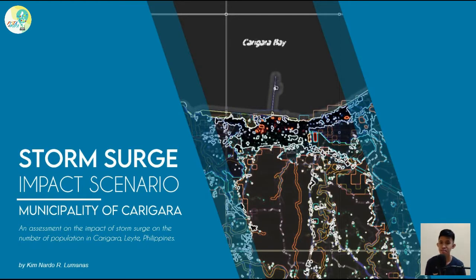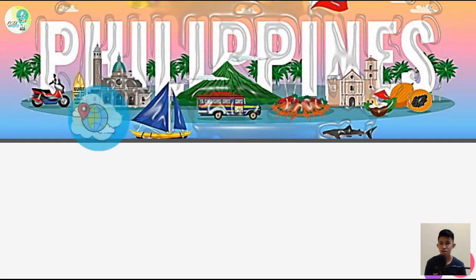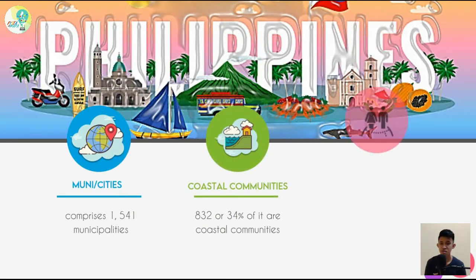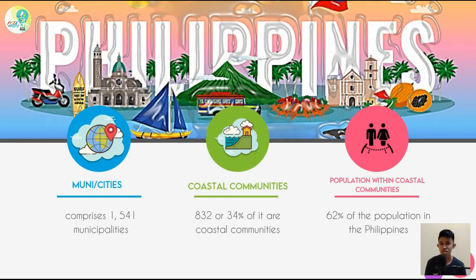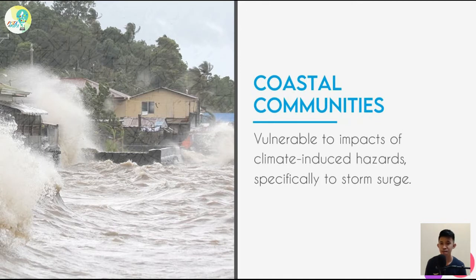The topic is all about the storm surge impact scenario in the municipality of Karigara, Leyte. This is an assessment on the impact of storm surge on the population of the town. The Philippines is an archipelagic state surrounded by hundreds of kilometers of shorelines where communities thrive, boosting coastal development. Out of 1,541 municipalities, 832 or 34% are coastal communities which comprise 62% of the population, making them largely vulnerable to impacts of climate-induced hazards, specifically storm surge.